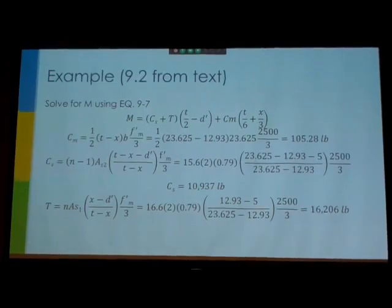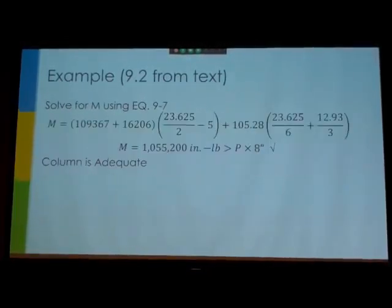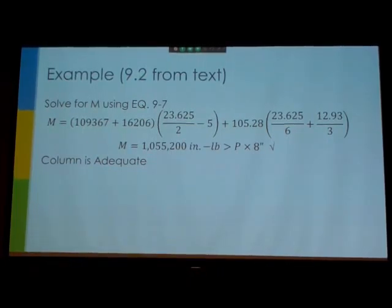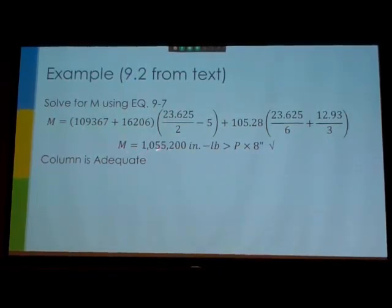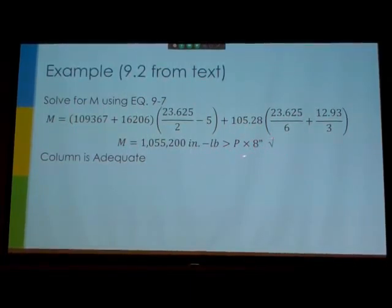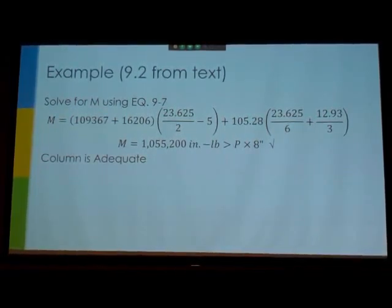So from there we go and we solve for our allowable moment, this slide, more horrible calculations. We get that our allowable moment is that right there, which is greater than p times 8 inches, which is what we put our eccentricity as, which means that it's adequate for our axial and bending.